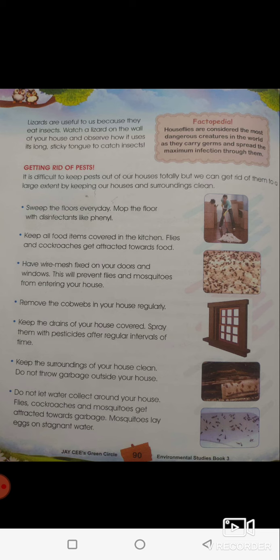Have wire mesh fixed on your doors and windows. We have to have wire mesh — as shown in the third picture, wire mesh is shown fixed at the window sill and on the door as well — because this will prevent flies and mosquitoes from entering your house. Also remove cobwebs regularly. Cobwebs are spider webs — the nest that a spider builds in our house — we have to remove them regularly.